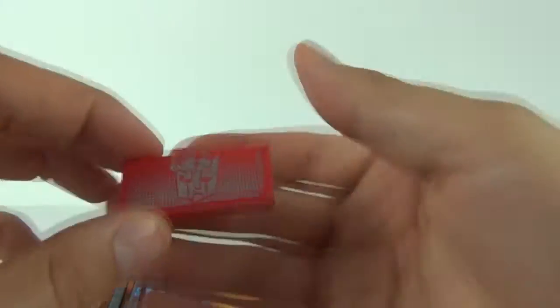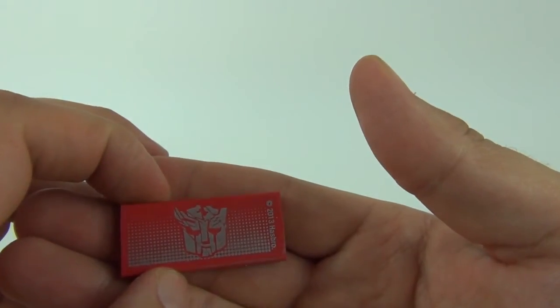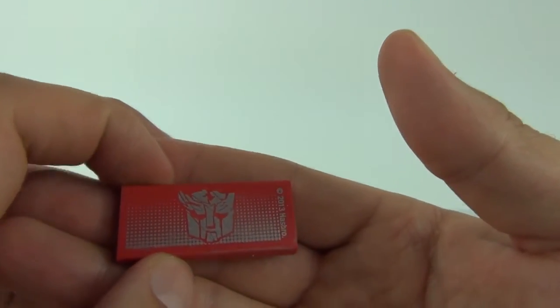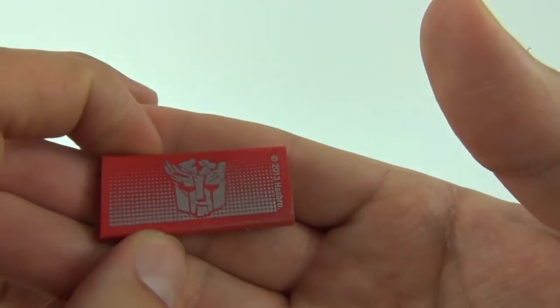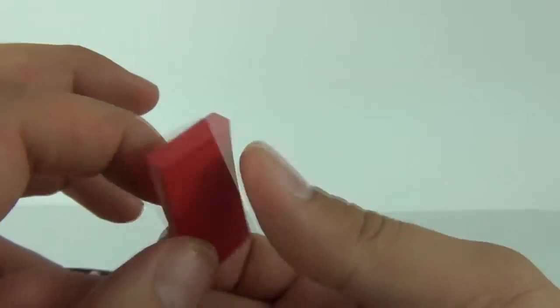And then we also have a rubber or eraser with this really nice Autobot symbol. Actually looks like the Autobot and Decepticon symbol which is faded into one, and that is in silver, and your eraser is in the red color.